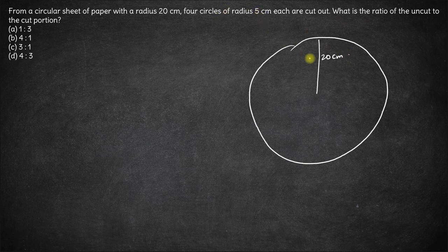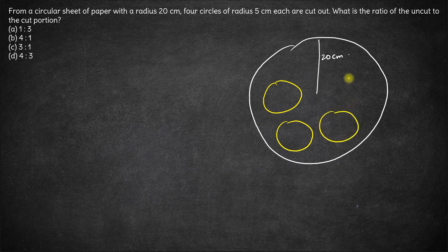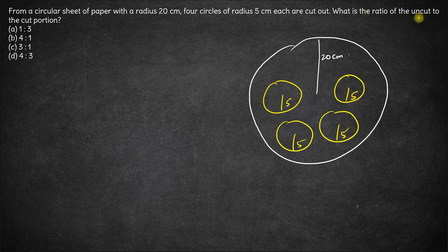Four circles of radius 5 cm are cut out. So four circles—1, 2, 3, 4—each of radius 5 cm is cut out. What is the ratio of uncut to the cut portion?